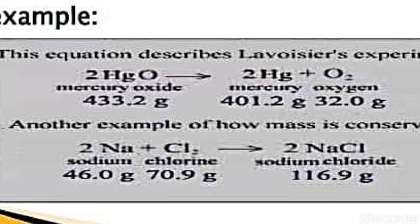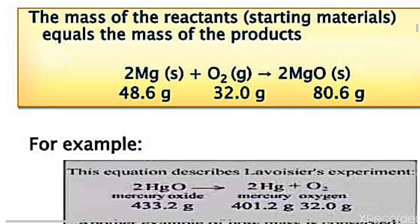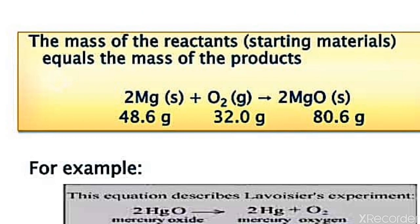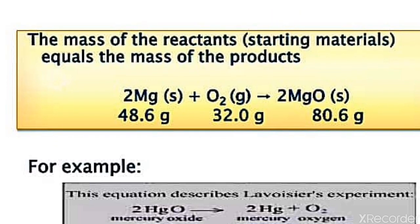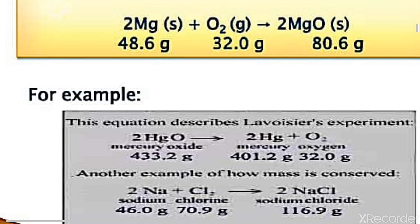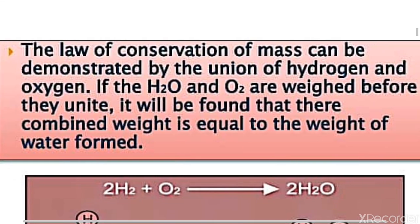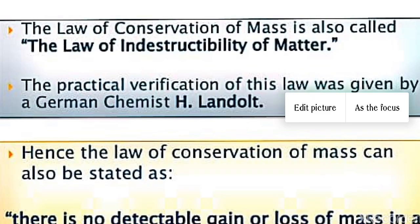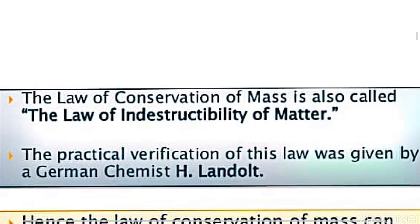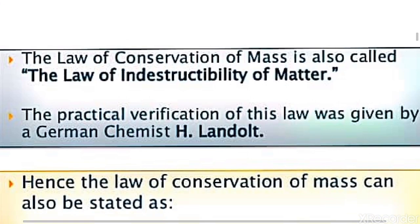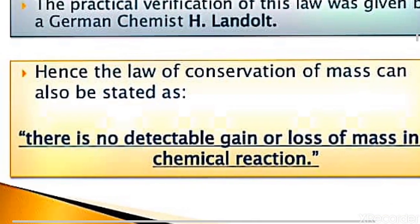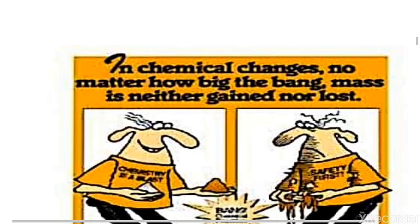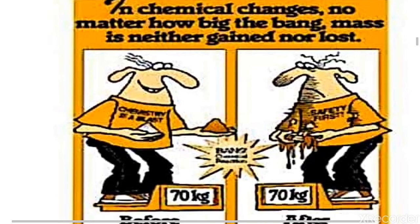This indicates that the mass of reactant equals mass of product. Another example: when 2Mg combines with oxygen to give 2MgO, the mass of reactant equals the mass of product. The transformation may take place during a chemical reaction, but the total mass remains the same. The law can also be demonstrated by the union of hydrogen and oxygen to give water. The Law of Conservation of Mass is also called the Law of Indestructibility of Matter — there is no detectable gain or loss of mass in a chemical reaction.